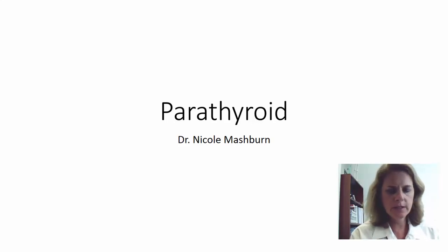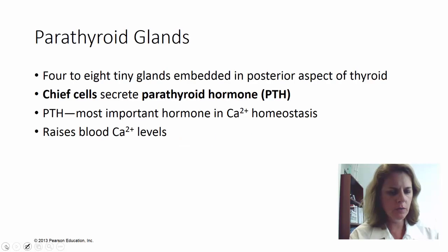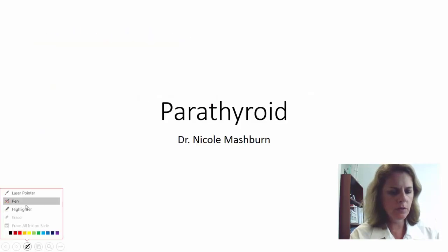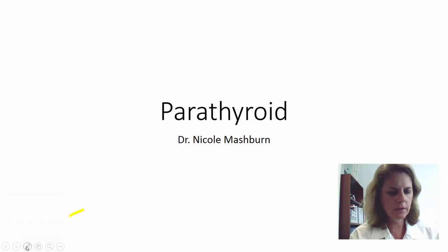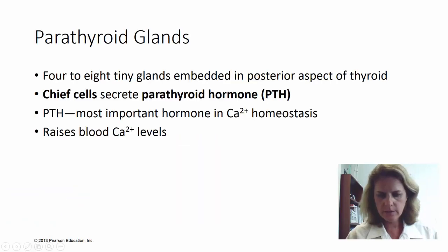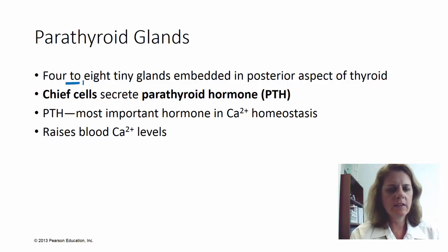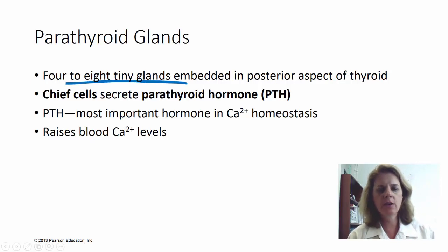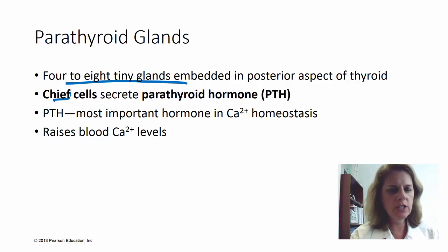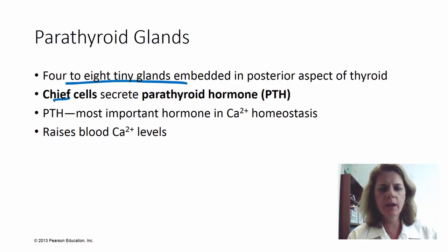Hello again. We're going to continue with our endocrine, and now we're going to talk about the parathyroid. The parathyroid is a set of glands on the back side of the thyroid gland. They're actually embedded on the back side of the thyroid — you have between four and eight of these tiny little glands. They're made up of cells called chief cells, and these chief cells are the ones that make parathyroid hormone.